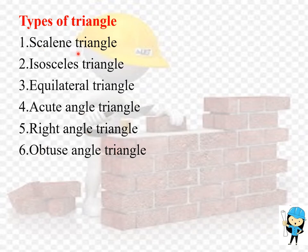In a scalene triangle, all 3 sides of the triangle are not equal. That is, the sides of the triangle A, B, C — A is not equal to B and B is not equal to C.